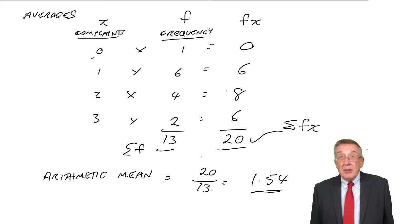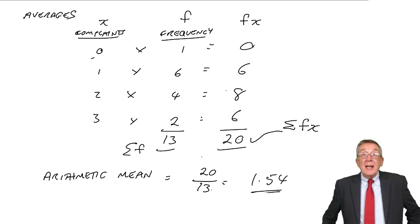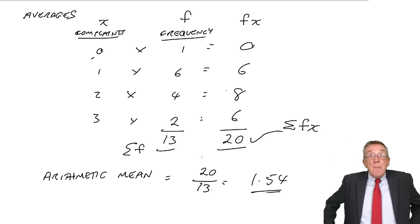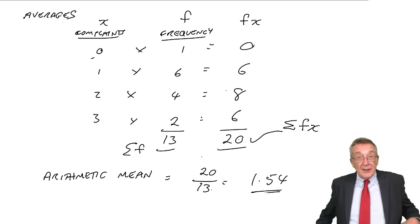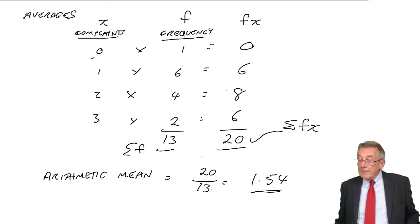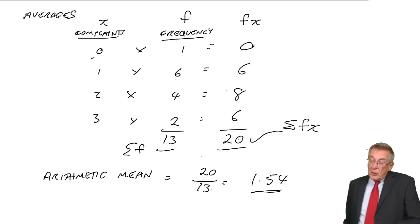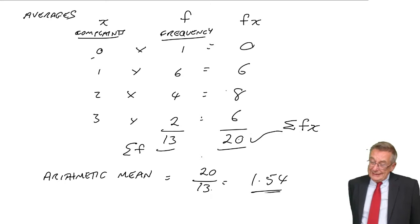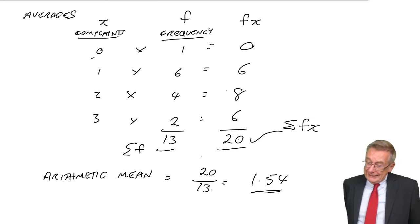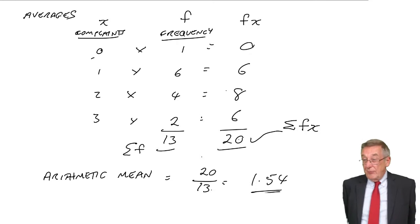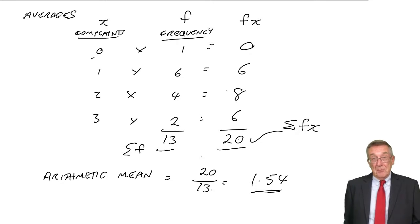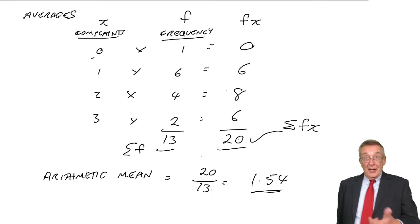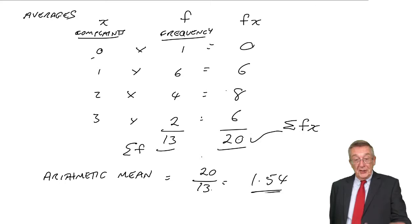All right, now that's the arithmetic mean. And I say again, that's what most people think of as being the average. Although 1.54 may be the average, but there are never 1.54 complaints a week — it's either 0, 1, 2, or 3.